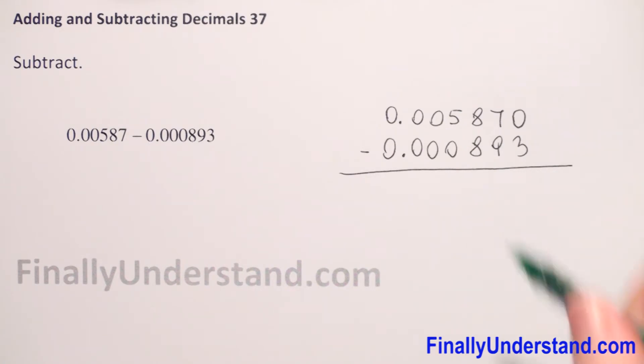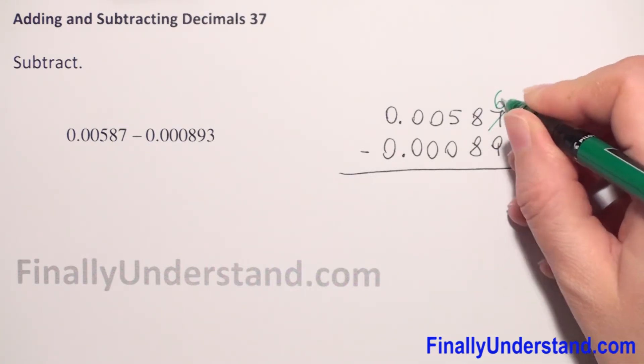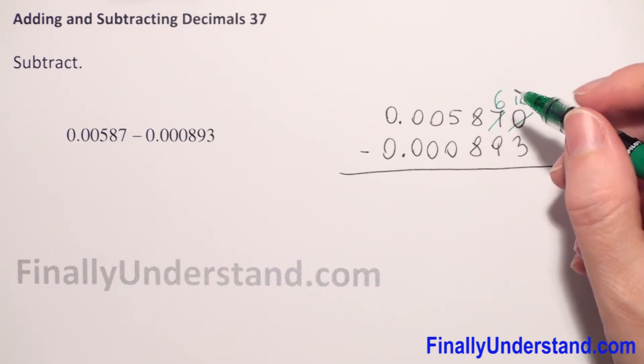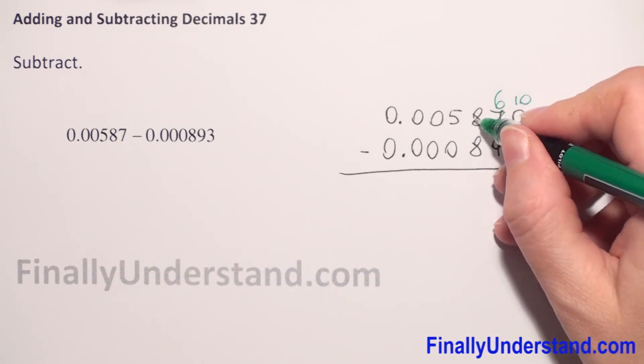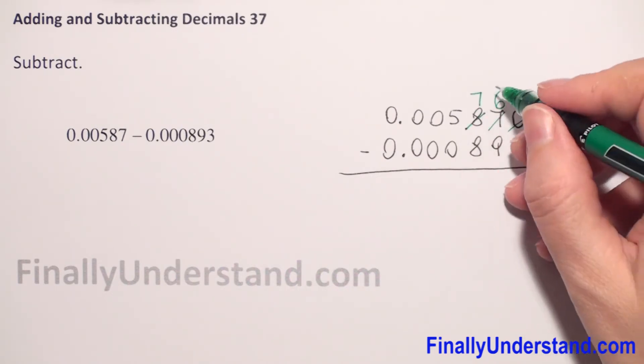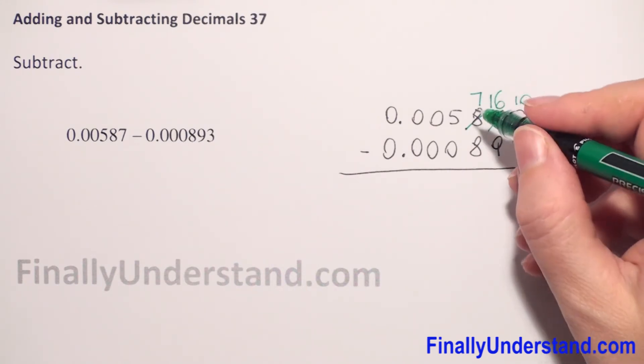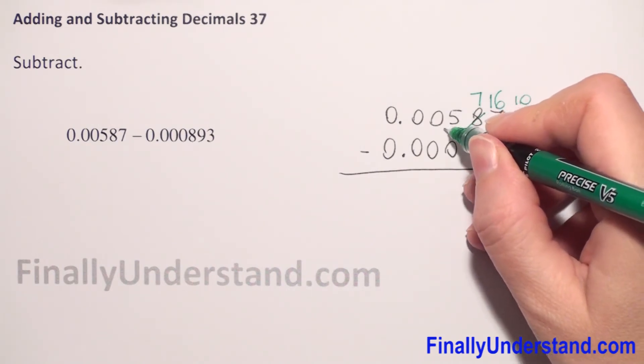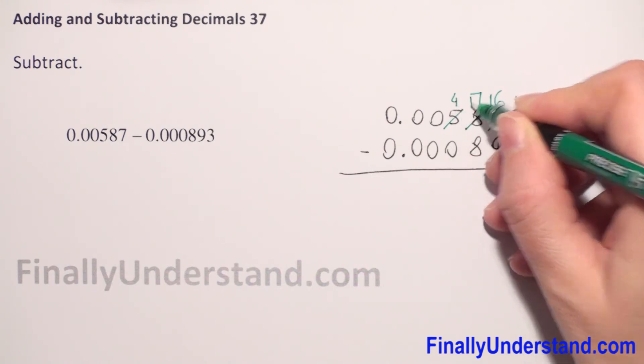So we need to borrow 1 from 7. So now it will be 6 because 7 minus 1 is 6. And again we will have 10. And 6 minus 9, 6 is less than 9. So again we have to borrow 1 from next digits. So 5 minus 1 is 4 and we have 17.